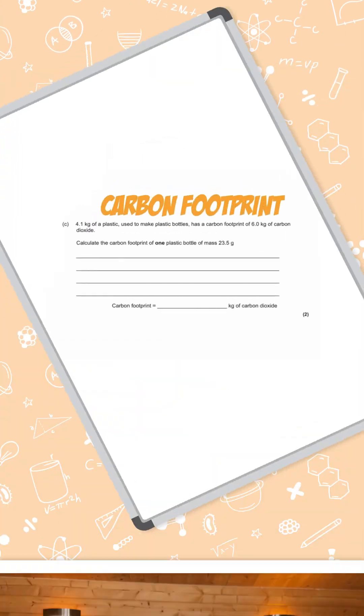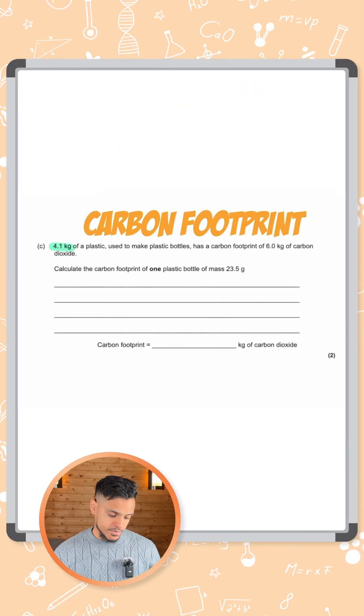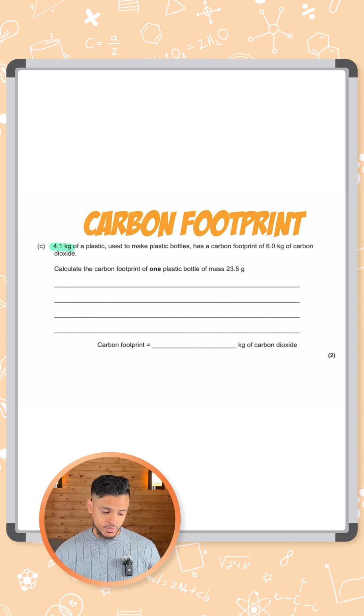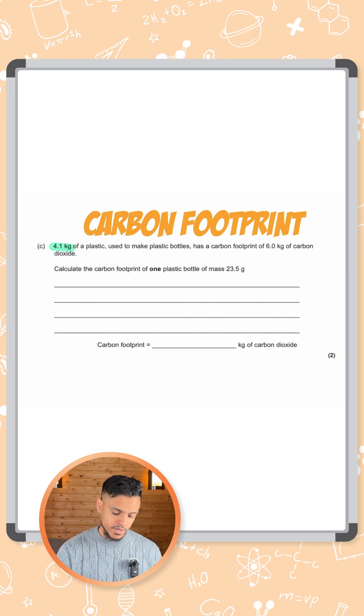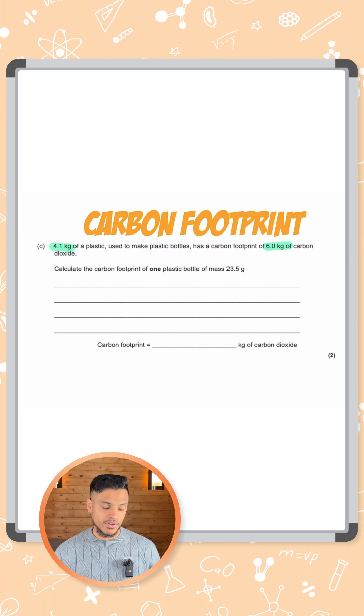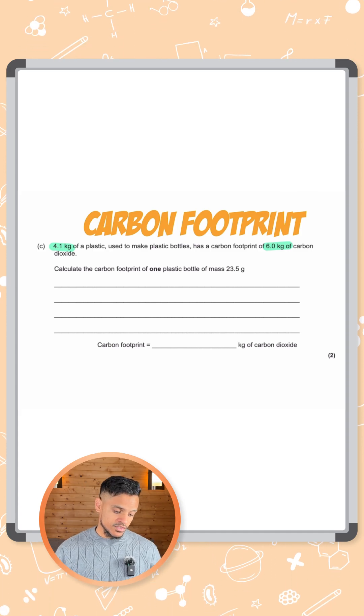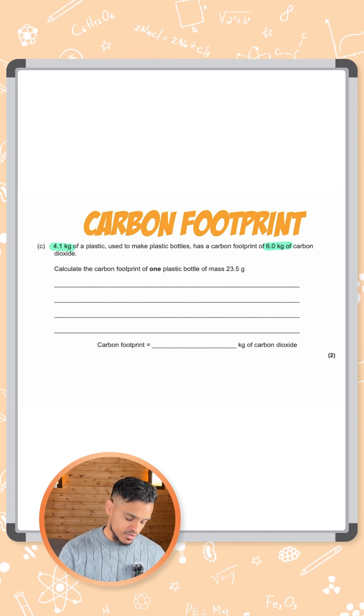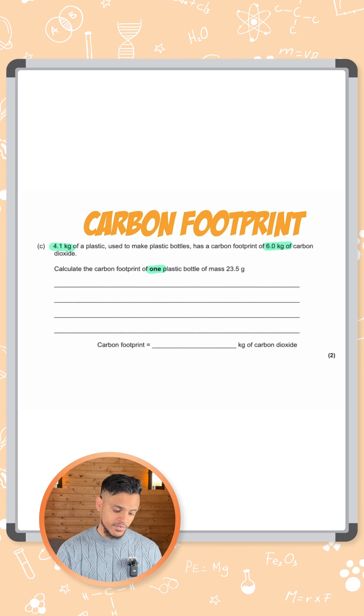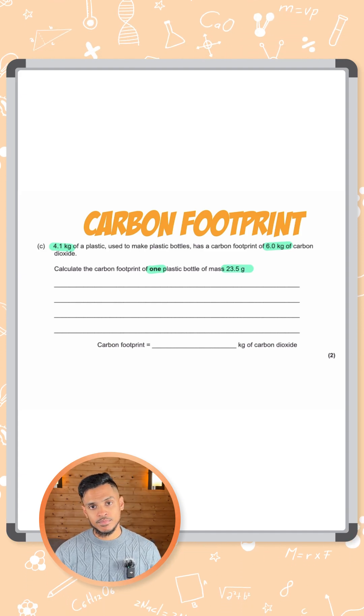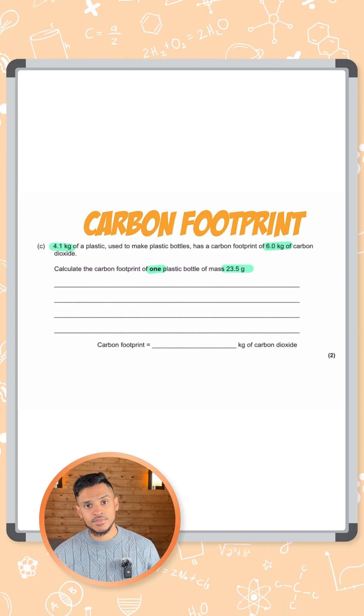We have a calculation here on carbon footprint. It says 4.1 kilograms of plastic is used to make plastic bottles and has a carbon footprint of 6 kilograms of carbon dioxide. It asks us to calculate the carbon footprint of just one plastic bottle, and they've given us the mass of one plastic bottle which is 23.5 grams.